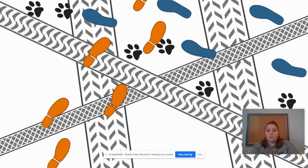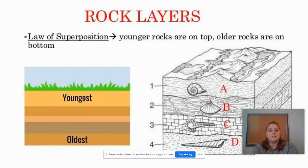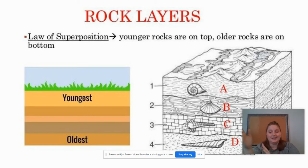Just like how we looked at the tracks to figure out which to follow to find the cookies, scientists do the same thing to figure out which rocks developed first and last. So we call this the law of superposition. Basically, if rocks are on the top, they're the youngest rocks — they were placed and formed the latest.